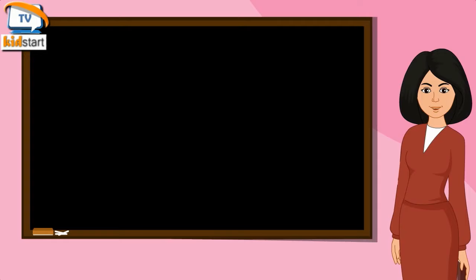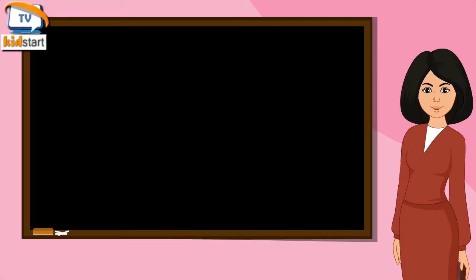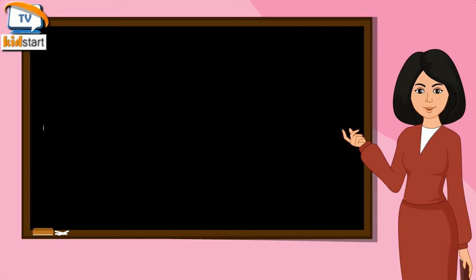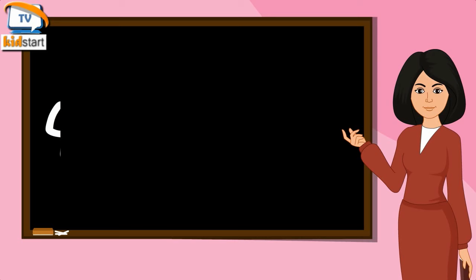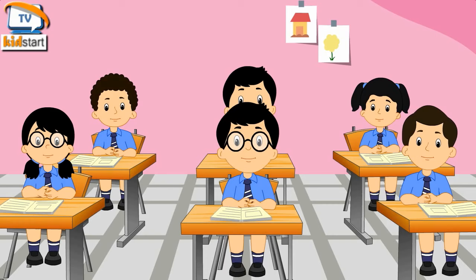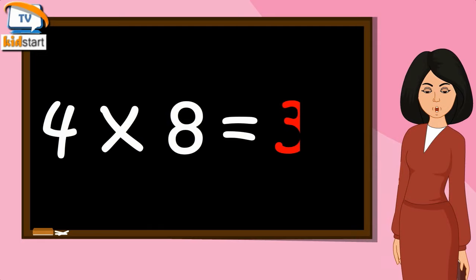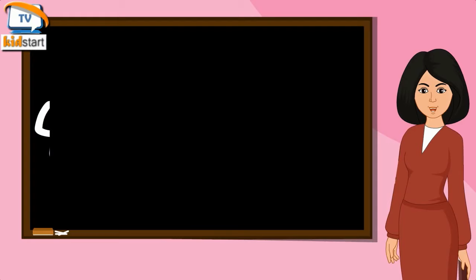Table of Four. Four Sevens Are Twenty-Eight. Four Eights Are Thirty-Two. Four Nines Are Thirty-Six. Four Tens Are Forty.